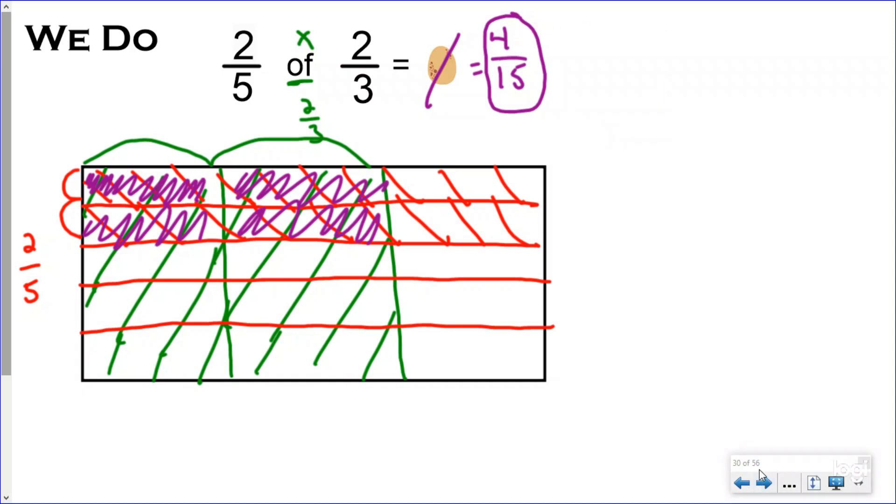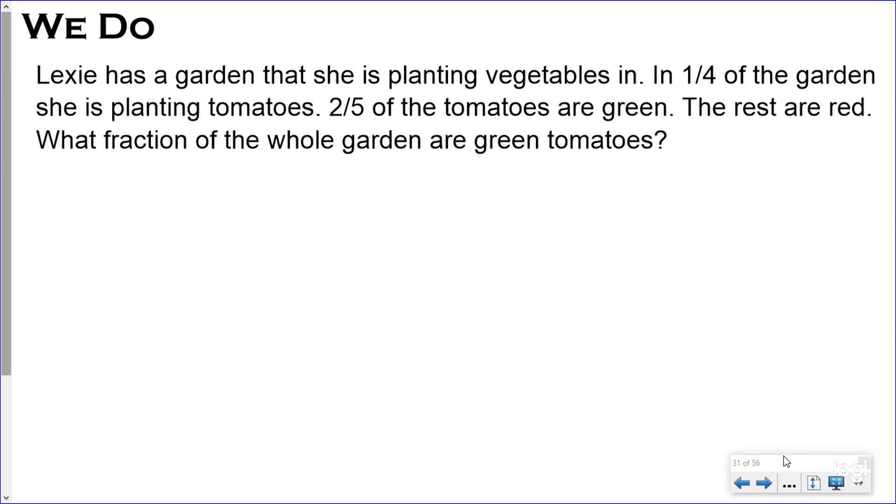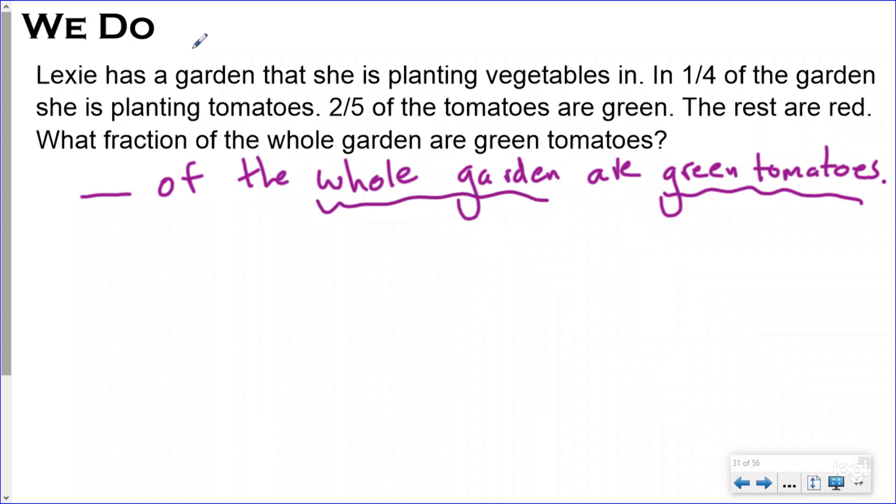So let's do a word problem together so you can see how we can use this strategy to help us. My question says, what fraction of the whole garden are green tomatoes? So my statement's going to say blank of the whole garden are green tomatoes. So I know because I wrote my statement that I'm looking for anything about green tomatoes or the garden. As I read this, Lexi has a garden that she is planting vegetables in. One-fourth of, I always underline the word when it's directly after a fraction, and then I read the next words to see what am I doing with this fraction. This says the garden, that just means it's one. So this is not multiplication, but still important. She's one-fourth of the garden is going to be tomatoes.